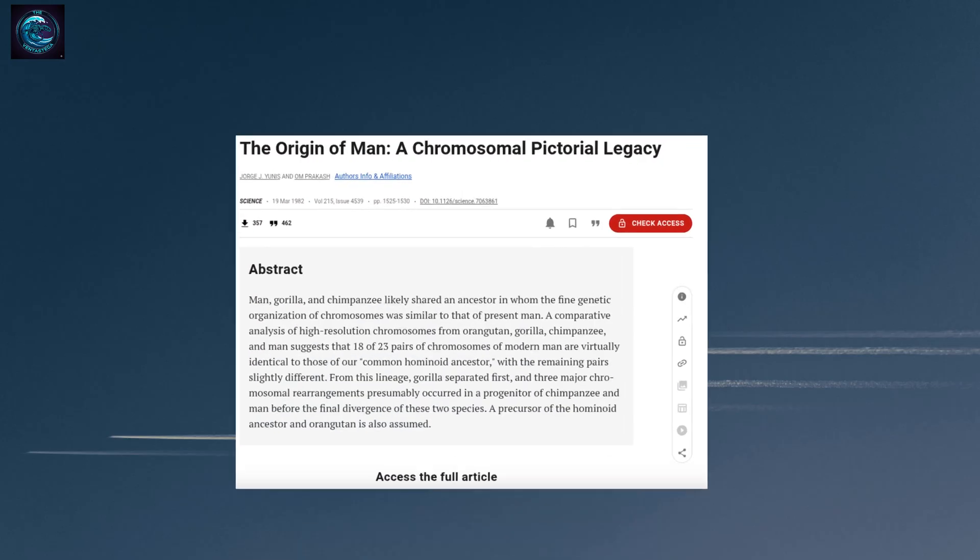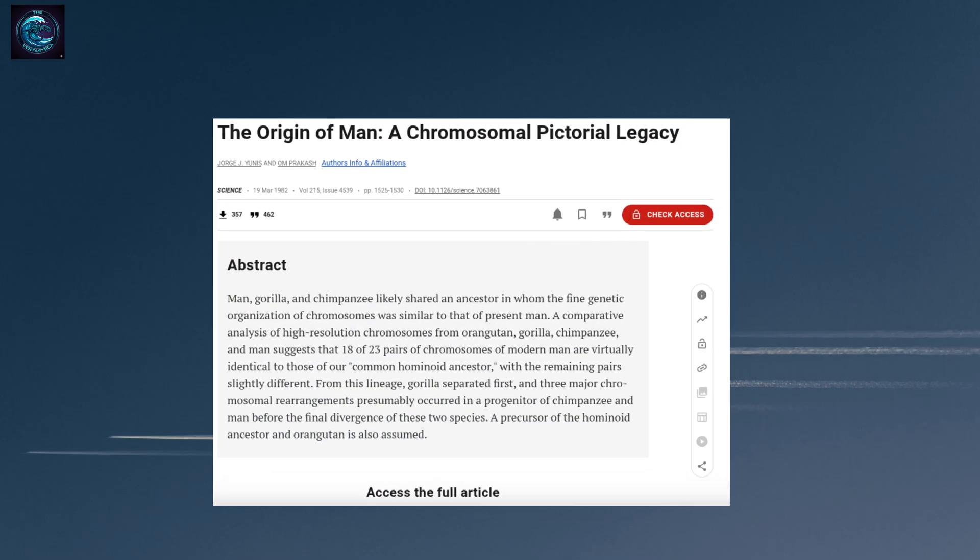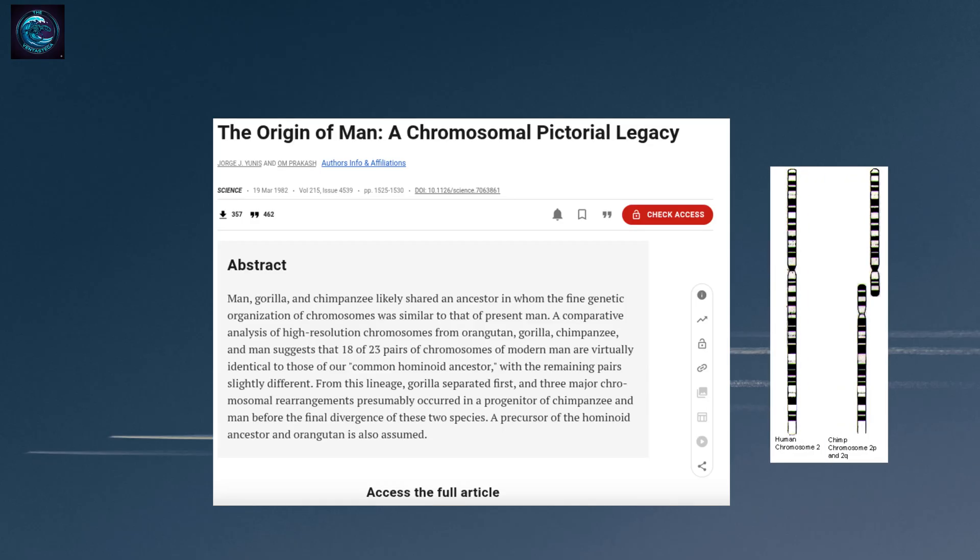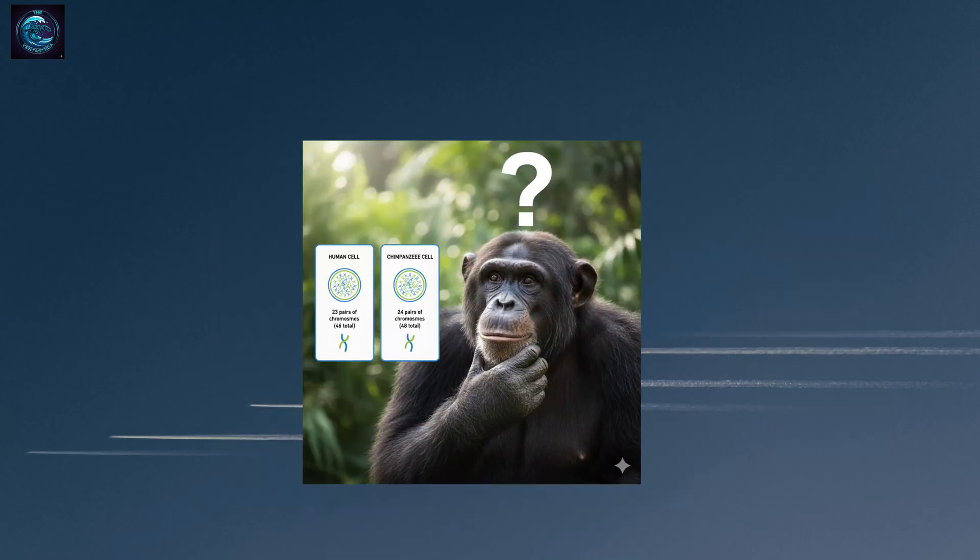Here's where it gets interesting. In the 1980s, scientists made a bold prediction. They hypothesized that somewhere in our evolutionary past, two separate ape chromosomes must have fused together into a single human chromosome. If this was true, there should be physical evidence of this fusion event written right into our DNA. But which chromosome? And where would we find the evidence?